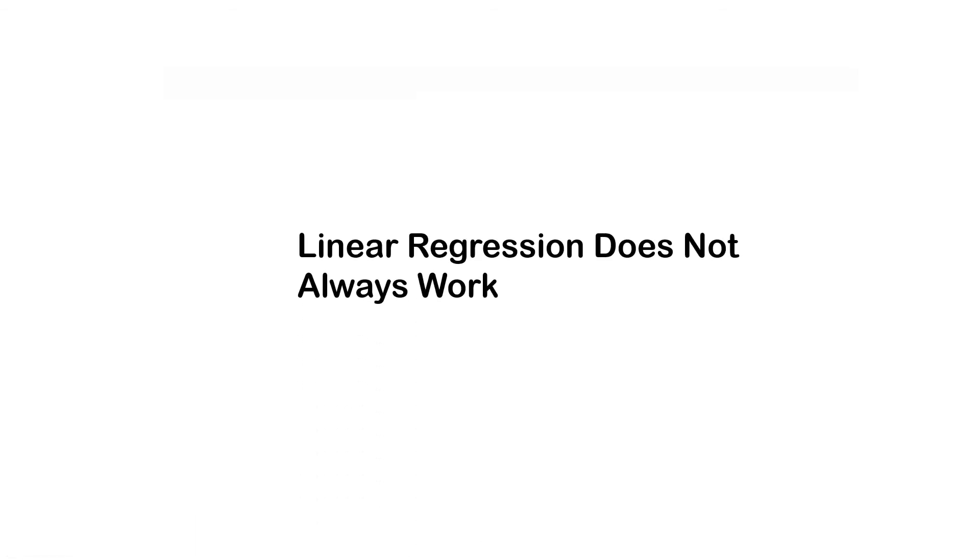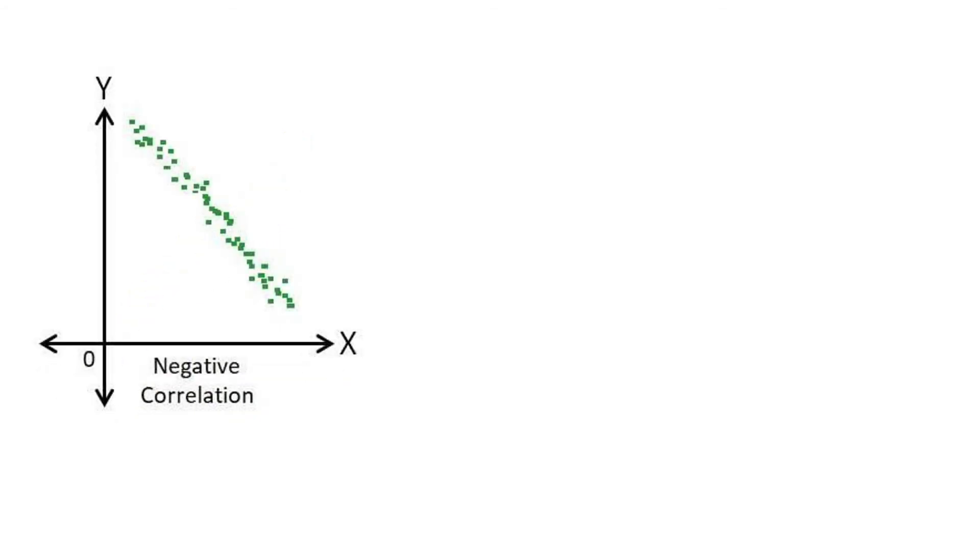Linear regression does not work always. For linear regression to work, we have to have a correlation between dependent variable and independent variable. The correlation can be positive correlation like this one or a negative correlation like this one. But if there is no correlation like this one, linear regression is not going to work.